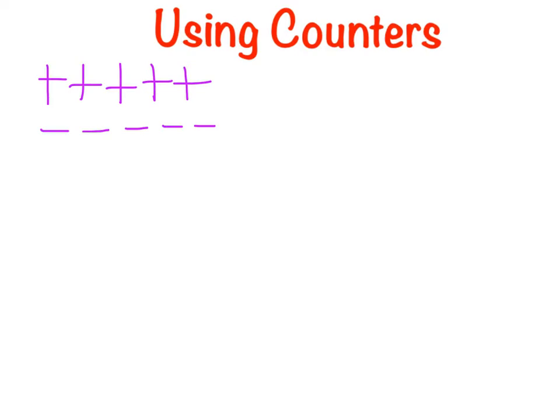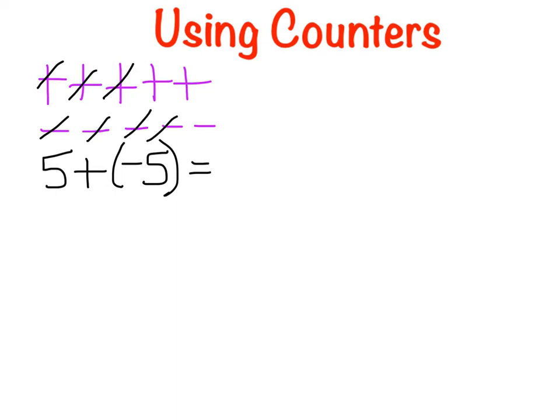Here's the number model that represents this situation. In order to solve this problem using the counters, I am going to cross off as many negative symbols as I can, and likewise cross off as many positive symbols as I can, so that I've crossed off the same number of each. You can see that this leaves me with no symbols left. So, positive five plus negative five equals zero.